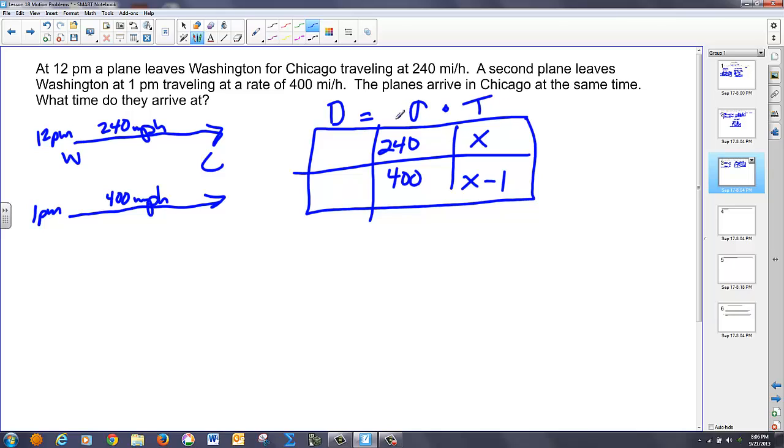Multiplying across, because I have my rate and my time, so I can multiply to get an expression for my distance. Get 240X. And I get 400 times the quantity of X minus 1. So, in this case, I look at the relationship between distances. They both left from Washington. They both end up in Chicago. Their distances are the same. So, plane 1 is equal to plane 2 in distance. So, in this case, 240X is equal to 400 times the quantity of X minus 1.